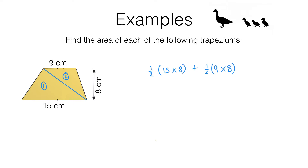So the area is: a half of 15 times eight, which works out to 60, and then a half of nine times eight, which works out to 36. So when we add those together we get 96 centimetres squared.